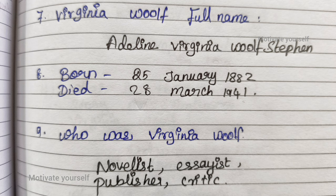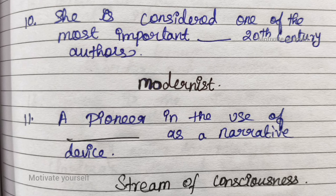Seventh question: Virginia Woolf's full name — Adeline Virginia Woolf Stephen. Born 25 January 1882. Died 28 March 1941. Ninth question: Who was Virginia Woolf? Novelist, essayist, publisher and critic. Tenth question: She is considered one of the most important 20th century Modernist authors.